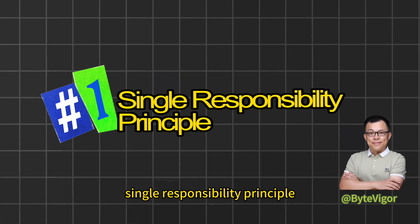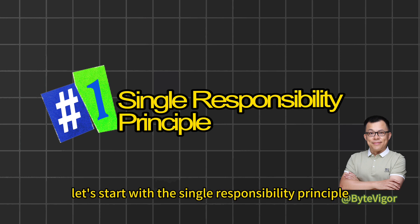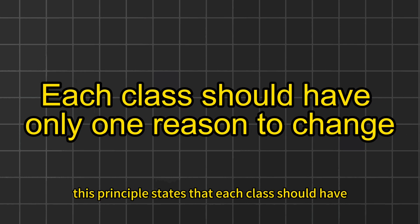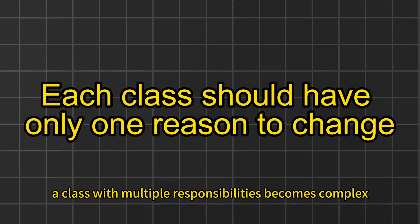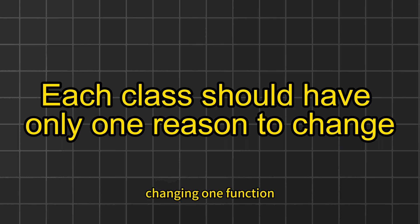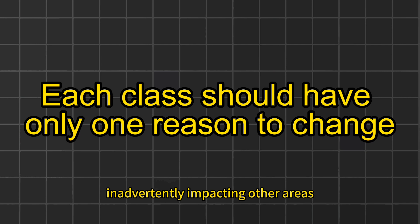Let's start with the Single Responsibility Principle, which I consider the most fundamental of all. This principle states that each class should have only one reason to change, meaning it should have just one job to do. Often, a class with multiple responsibilities becomes complex, especially if it has a complicated internal state. Changing one function could ripple through its internal state, inadvertently impacting other areas.